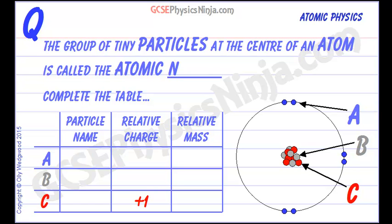Early in the 1900s, around about 1911, a scientist called Rutherford proposed a new type of model for the atom. It was called the nuclear model, and it was made up of electrons which were orbiting in clouds or shells around a central nucleus. The nucleus contained two types of particles: the proton, and the neutron, which was discovered a few years later. The group of tiny particles at the centre of an atom is called the atomic nucleus.